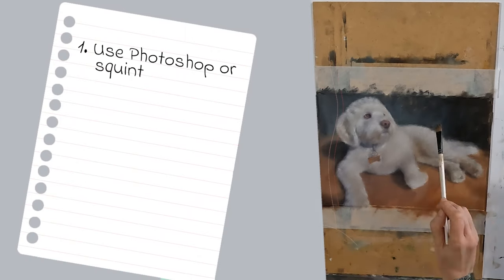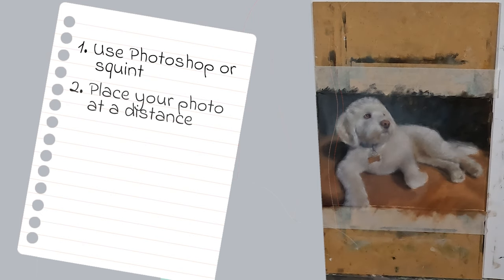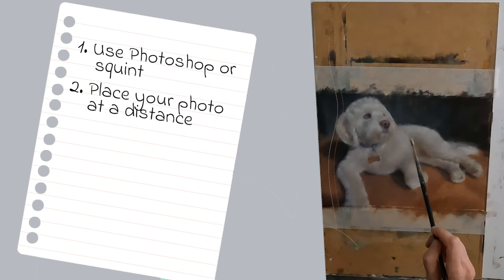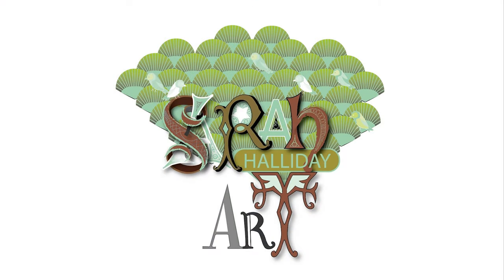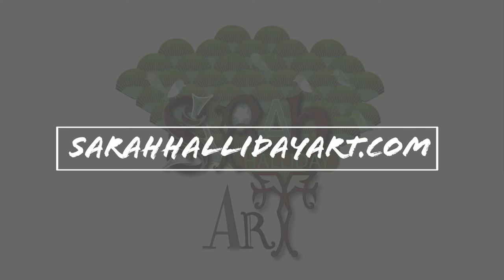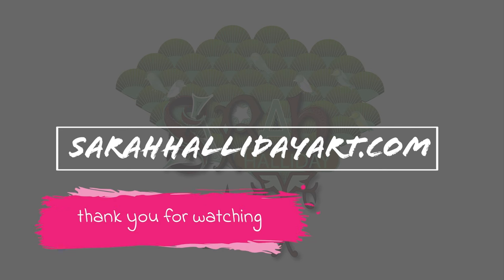To recap: number one, use Photoshop or squinting to help you identify your main values. Number two, when painting your colour, use a photo at distance from your workstation to stop you from painting in the detail. Number three, use brushwork, temperature changes, and edges to give interest to your artwork. I hope you have enjoyed today's video and found it useful. Please like and subscribe if you can, and check out my website sarahhallidayart.com where you will find examples of my work and details of online classes that I run. Thank you for watching and see you for the next one.